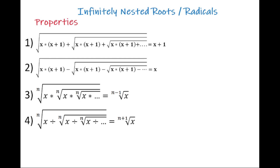Between the roots there is a plus sign. If the number inside the root can be written as the multiplication of two consecutive numbers, then the result is going to be equal to the bigger one.